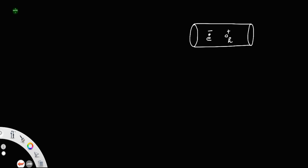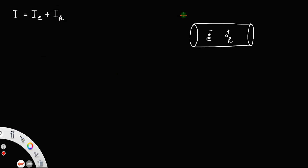So the total current I will be due to the current due to electrons and the current due to holes. Suppose we apply an electric field of magnitude E across the conductor. Let A be the cross-sectional area of the conductor and L be the length of the conductor.